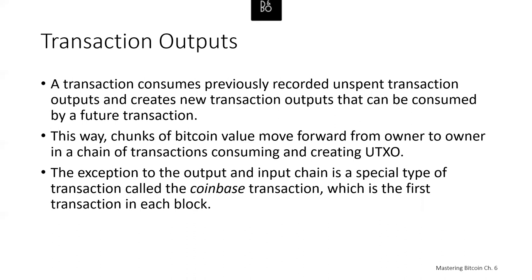Imagine a shopper buying a $1.50 beverage, reaching into her wallet and trying to find a combination of coins and bank notes. She would choose exact change if available — a dollar bill and two quarters, or six quarters — or if necessary a larger unit such as a $5 bill. If she hands over too much money, she expects change back, which she'll put in her wallet for future transactions. Similarly, a Bitcoin transaction must be created from a user's UTXOs in whatever denominations are available. Users can't cut a UTXO in half any more than cut a dollar bill in half.